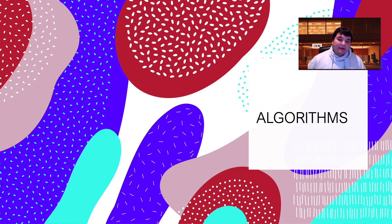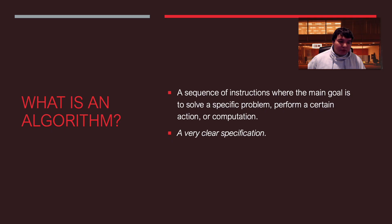Today we're going to talk about algorithms. So what is an algorithm? A sequence of instructions where the main goal is to solve a specific problem, perform certain actions, or computation. It's a very clear specification or instructions of what to do.